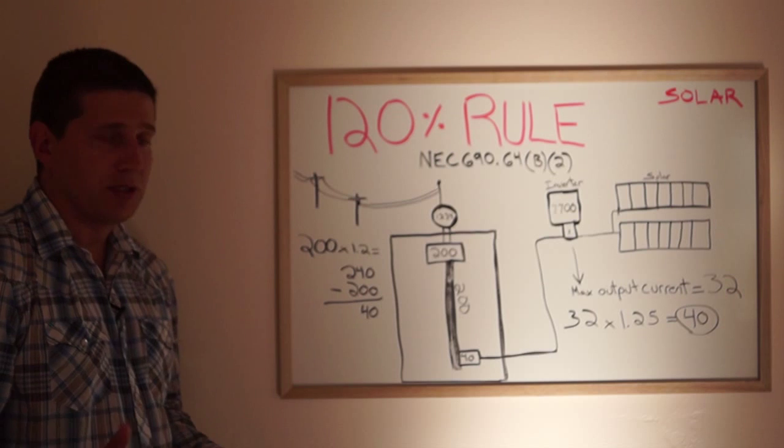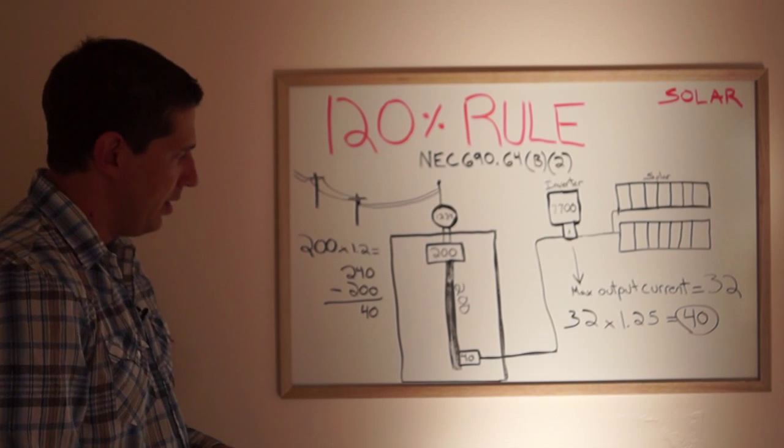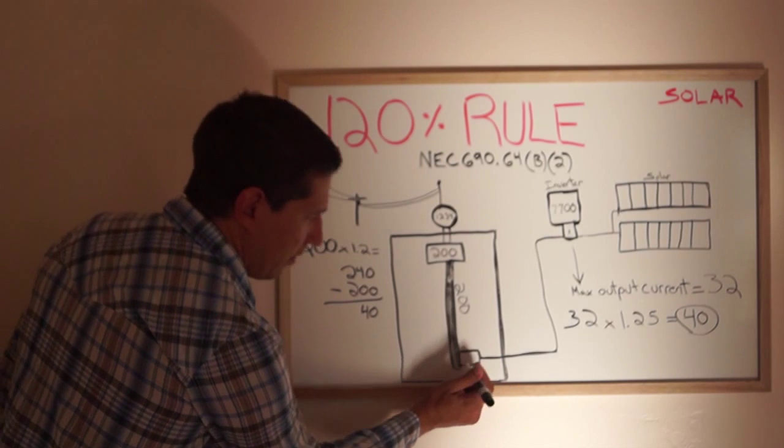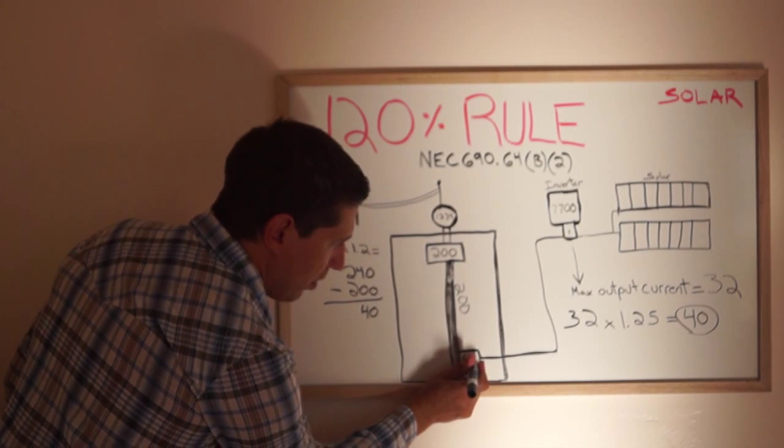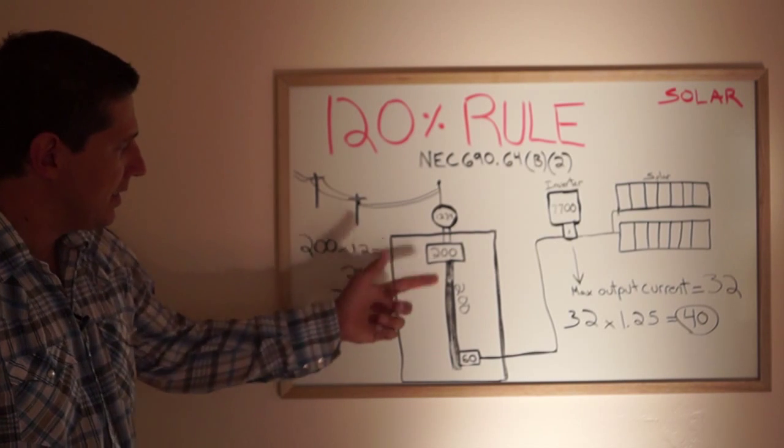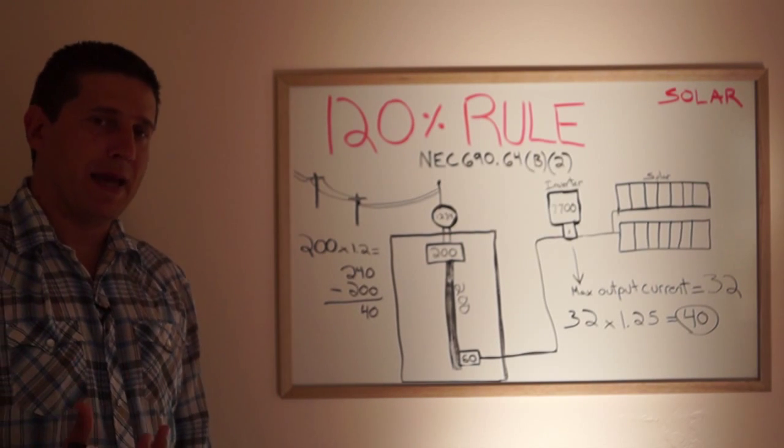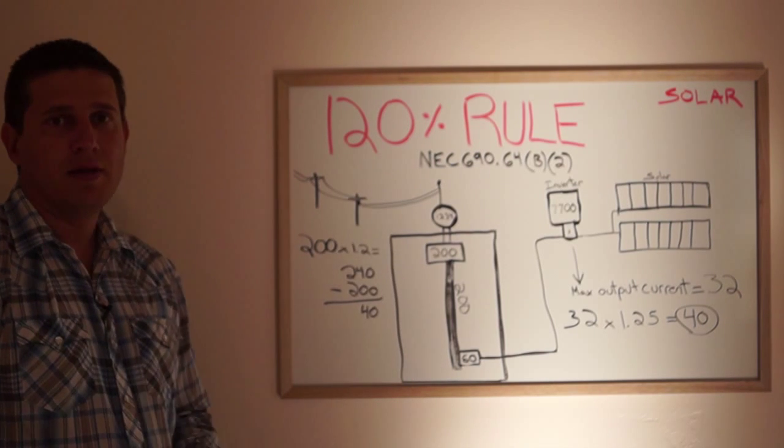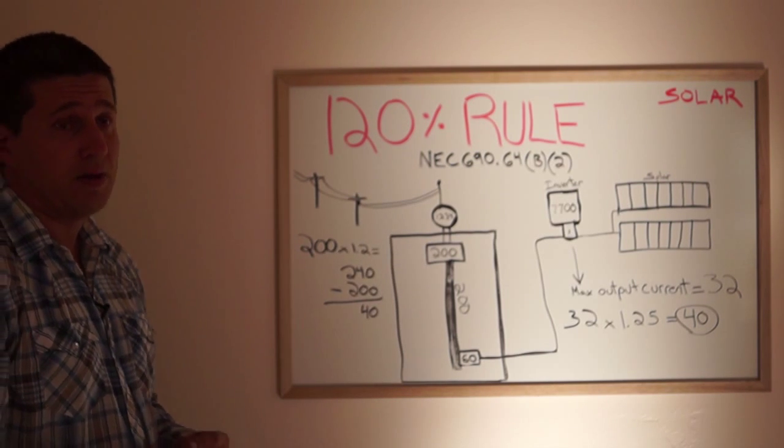Now let's say you wanted to add a larger system. Let's say you wanted to add 60 amps of solar to this main panel. We're 20 amps over capacity, right? We're 260. 260 amps could potentially hit this main bus bar causing a fire which is why the code exists.